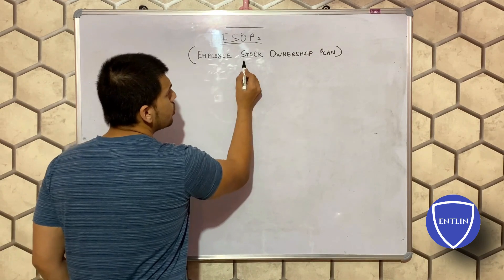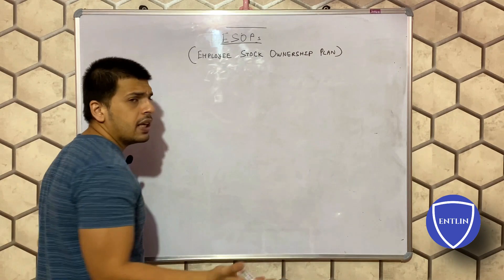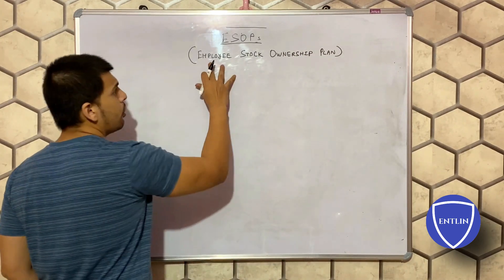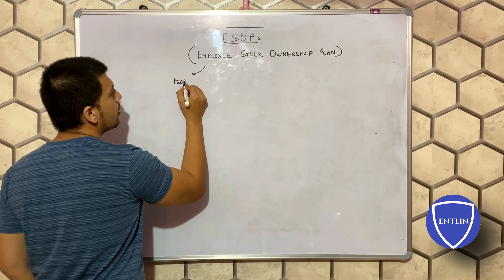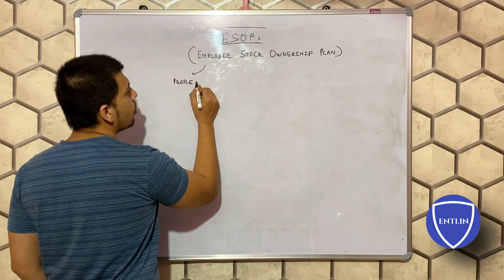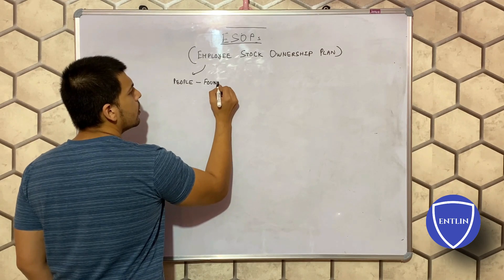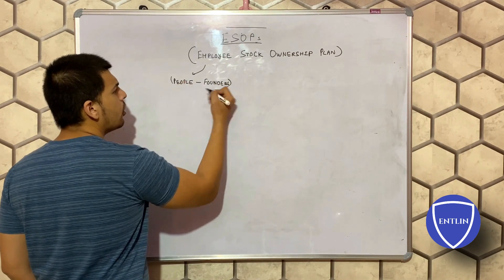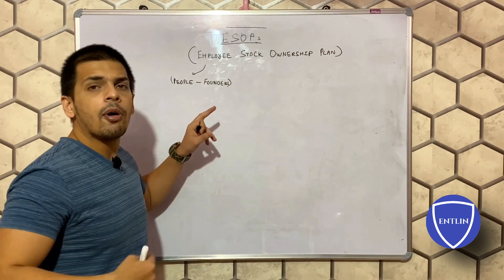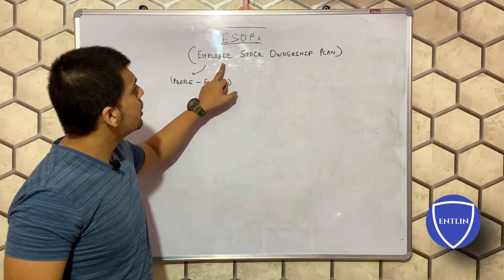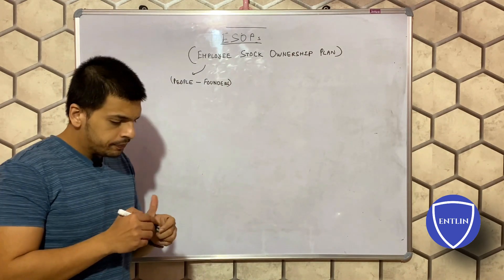The name suggests it - Employee Stock Ownership Plan. Employee means any person who is joining your company. Here, employee specifically means people who are other than co-founders - so people minus founders. These are the employees, meaning team members apart from your founding team. The stock ownership that you give them is called ESOP.